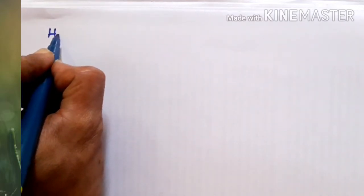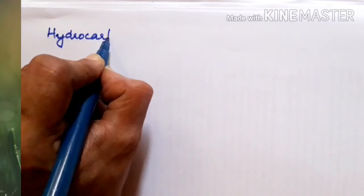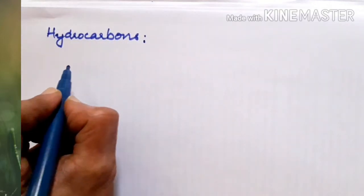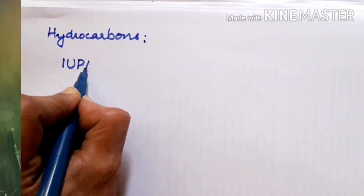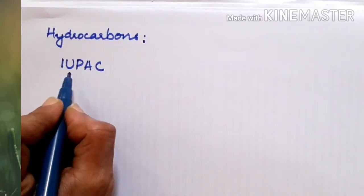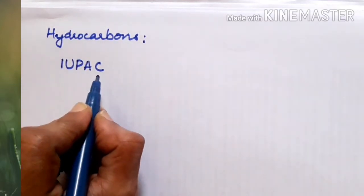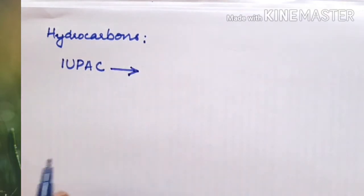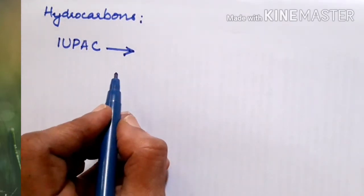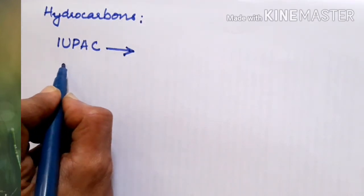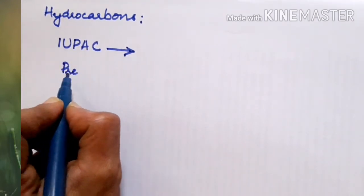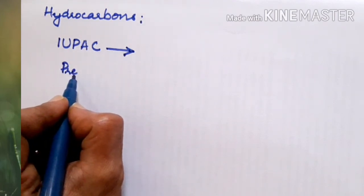We will briefly overview what is learned in 10th standard. Hydrocarbons are named according to their prefixes and suffixes as recommended by IUPAC conventions - International Union of Pure and Applied Chemistry. Those chemists have set up a rule, that is IUPAC rule, for naming the compounds or nomenclature of compounds.